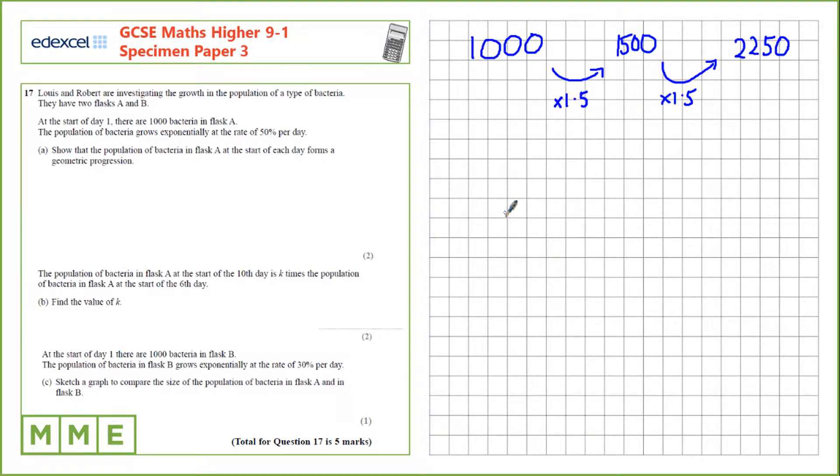The population of bacteria in flask A at the start of the 10th day is k times the population of bacteria in flask A at the start of the sixth day. Find the value of k. So we can form an equation here.